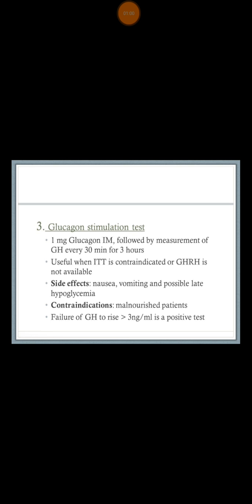By injecting glucagon, you expect that the growth hormone level will rise to more than 3 nanograms per ml. Failure to reach that level indicates that the patient is suffering from growth hormone deficiency.